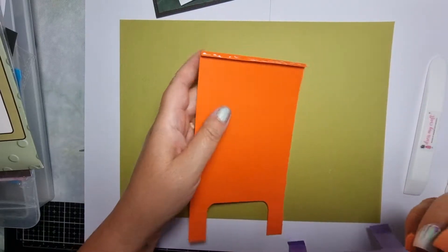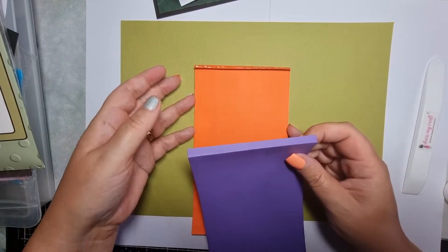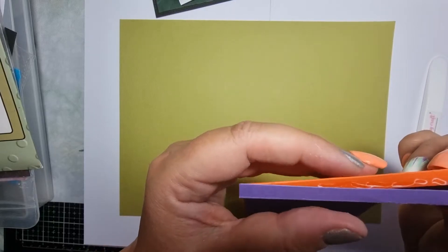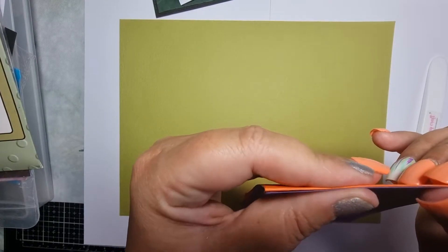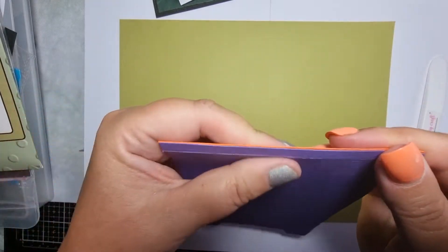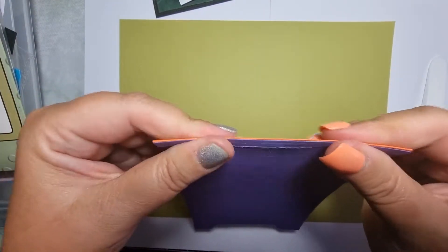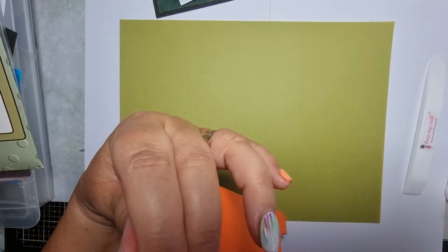So I've put glue on there and then what I will do is open that one up and stick, line that over there like that. You can see, and then we'll press, press that down.